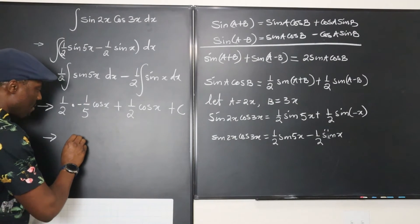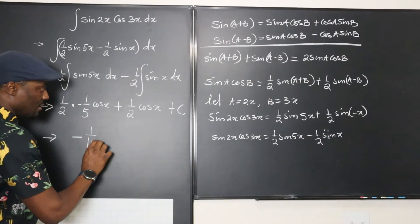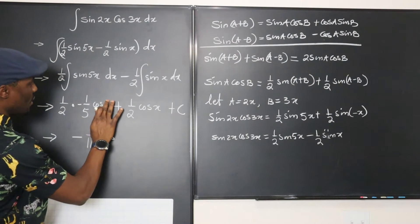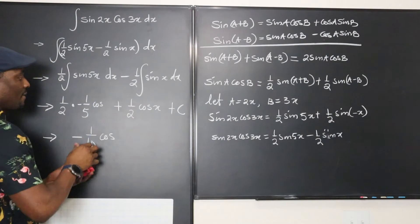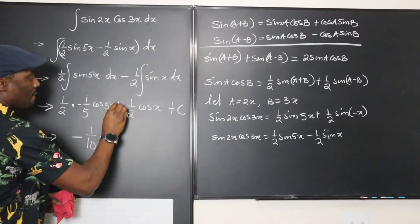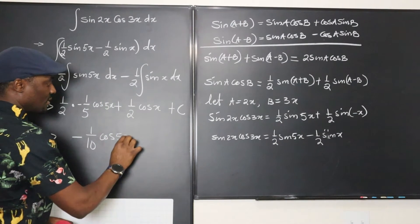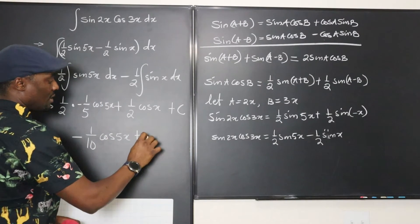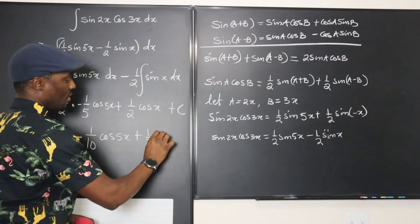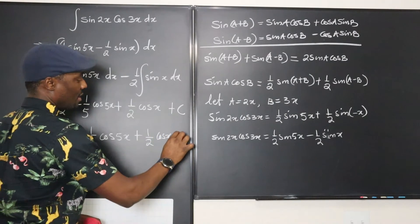This is going to be negative 1 over 10. No, this is not cosine x. This is cosine 5x. Cosine 5x. So 5x, and this would be plus one half of cosine x plus c.